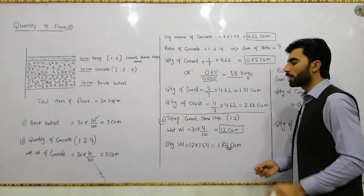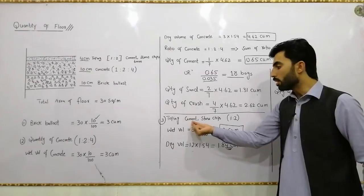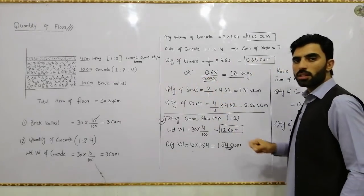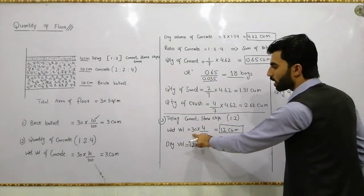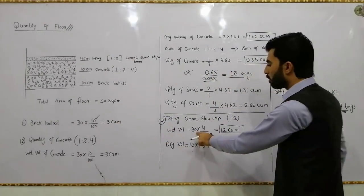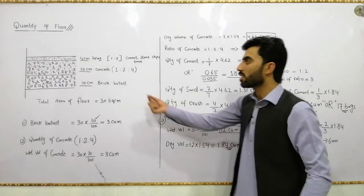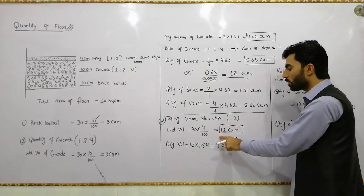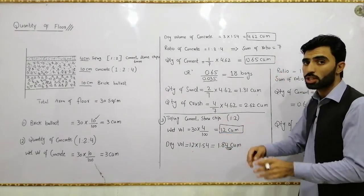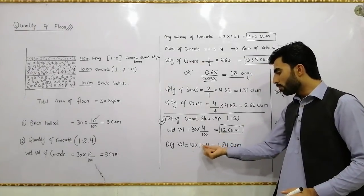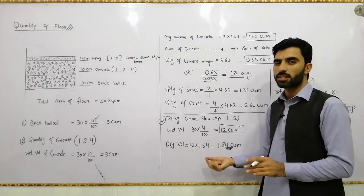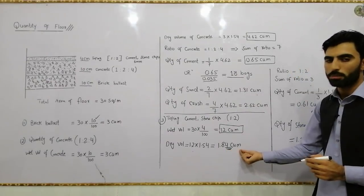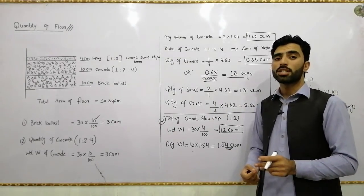For the topping layer, the materials are cement and stone chips of 6-millimeter size. Wet volume = 30 (total floor area) × 4 ÷ 100 = 1.2 cubic meters. The thickness is 4 centimeters, divided by 100 to convert to meters. Now converting to dry volume: dry volume = 1.2 × 1.54 = 1.84 cubic meters, because volume increases by 54 percent.